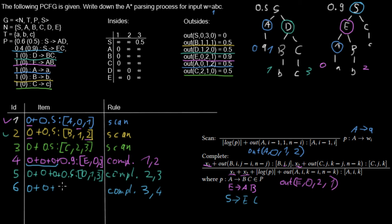Combining E (line 3) and C to derive an S item: this case has a weight of 0.9. We add the outside weight of the S item we are generating, which is 0. The item we get is S from 0 to 3. This is that item and we used the complete rule for it.